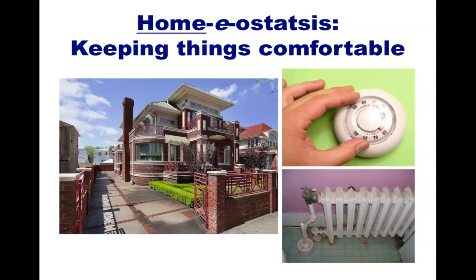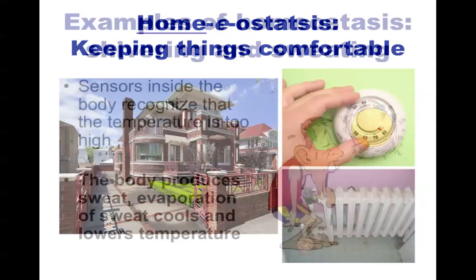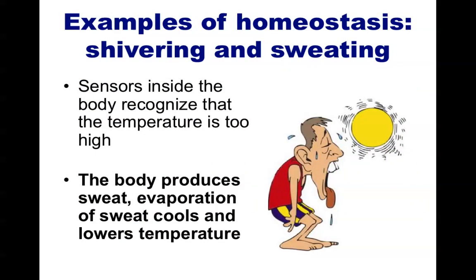Our bodies also exhibit homeostasis. For a simple example, consider what happens if you're outside and it's too hot. Something in your body recognizes that the temperature outside is high, and that your internal temperature is slowly beginning to rise. This signal leads your body to respond by producing sweat. The evaporation of your sweat draws heat energy from your body and lowers your internal temperature back down to normal.